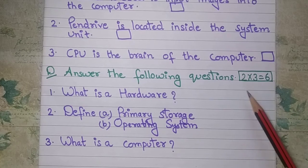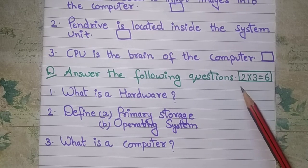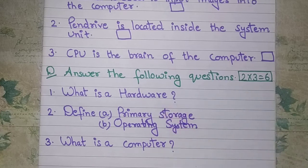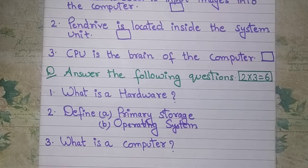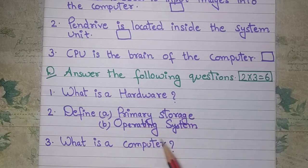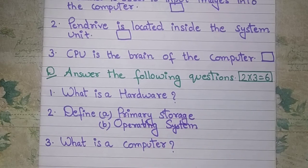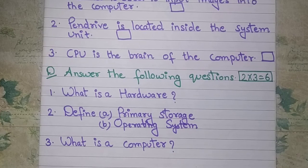You have to answer these questions for two marks, not just a single line. What is hardware — write with examples. What is a computer — explain with the correct definition. Similarly, primary storage and operating system should also be answered properly with full explanations. That's all for today, thank you.